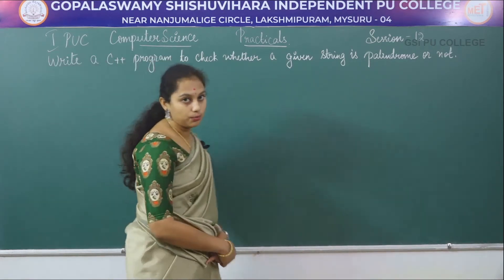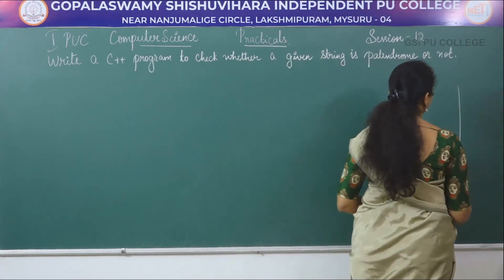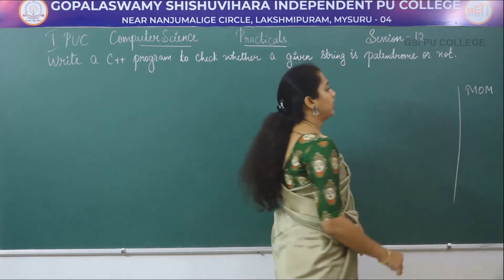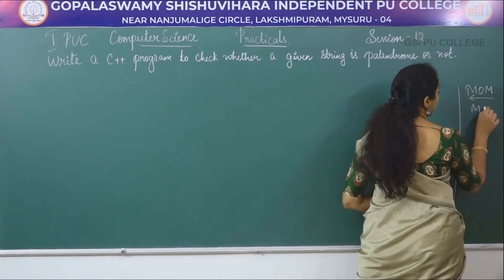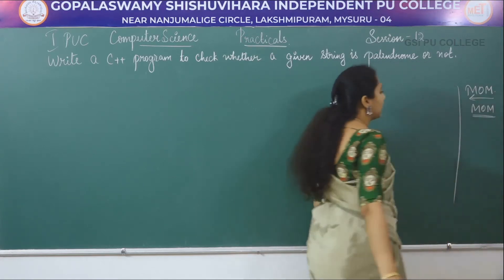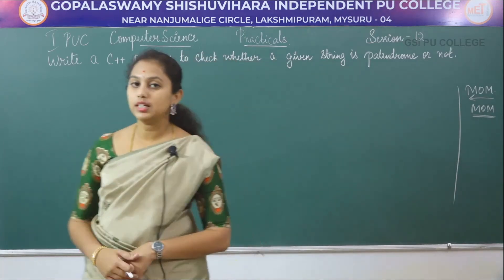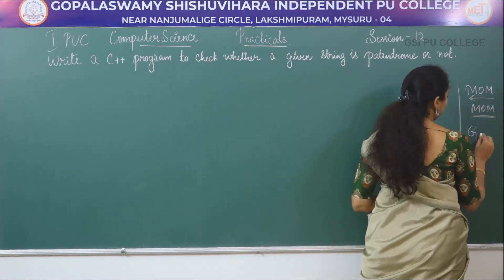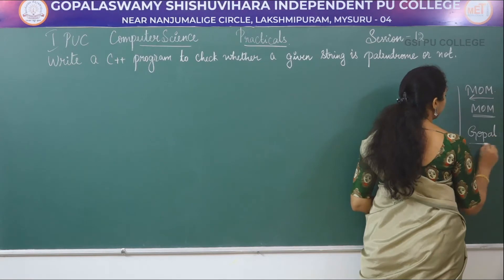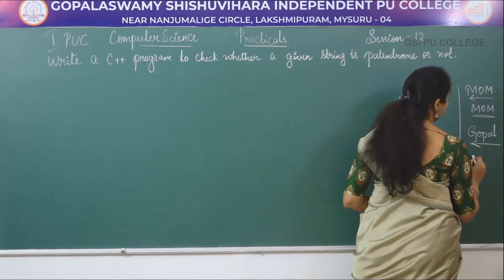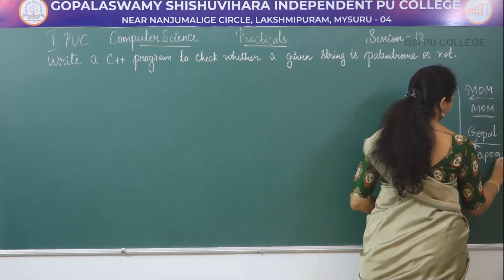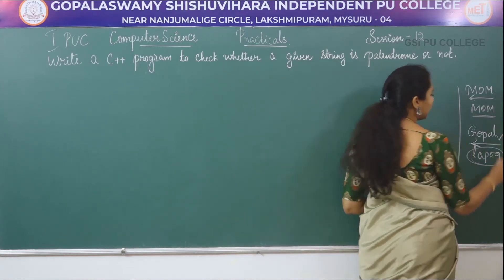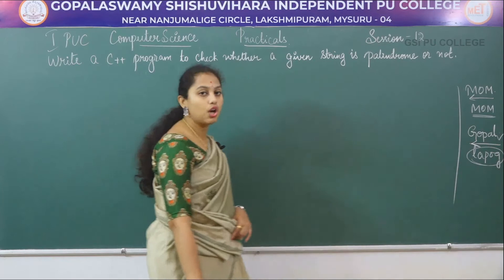So what is the meaning of palindrome? Consider a string called 'mom' — even if you reverse the string, you will get the same string 'mom'. This type of strings are called palindrome. Consider another example: 'Gopal'. If you reverse this string, you get 'LAPOG', which is not the same as the given string. So this type of strings are not palindrome.